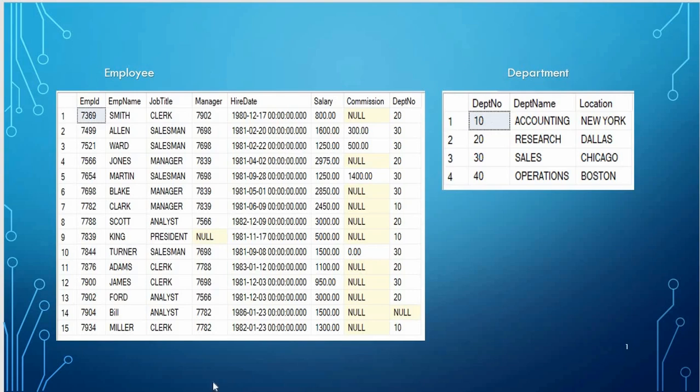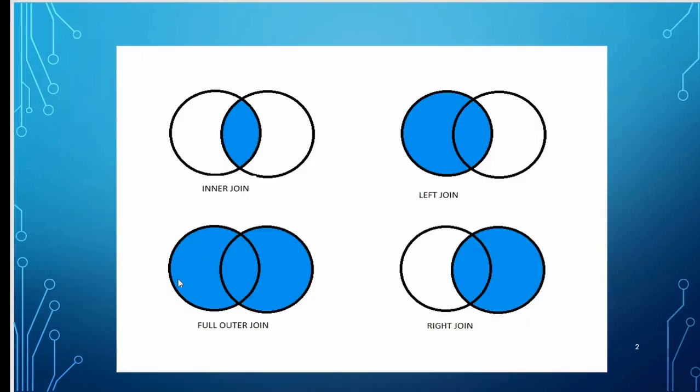To get the non-matching records from both tables, we are going to perform a full outer join.